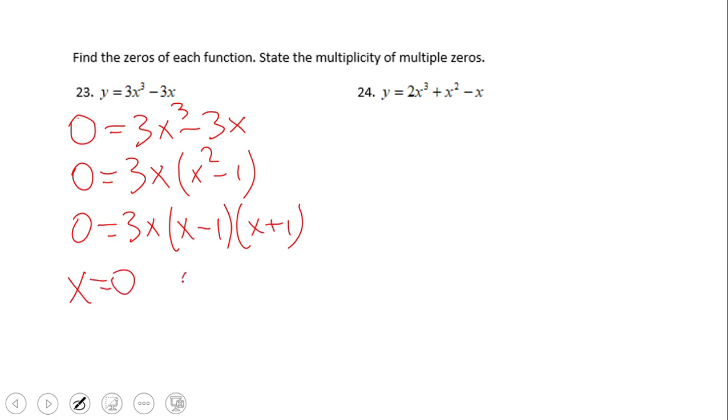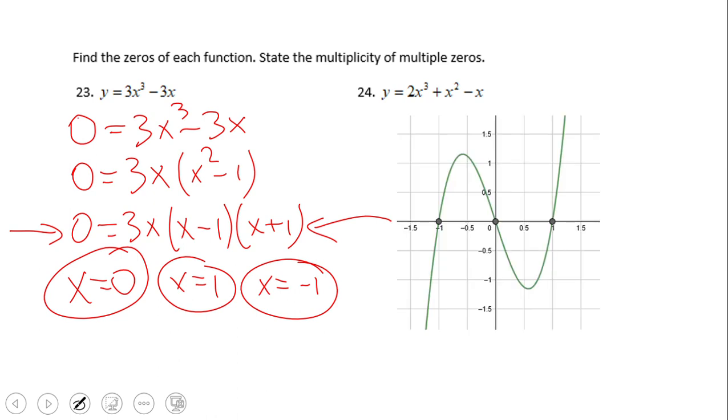So now we have the three zeros of this function: x equals zero, x equals one, and x equals negative one. Since we have no exponents in the factored form right here, each one has multiplicity one.